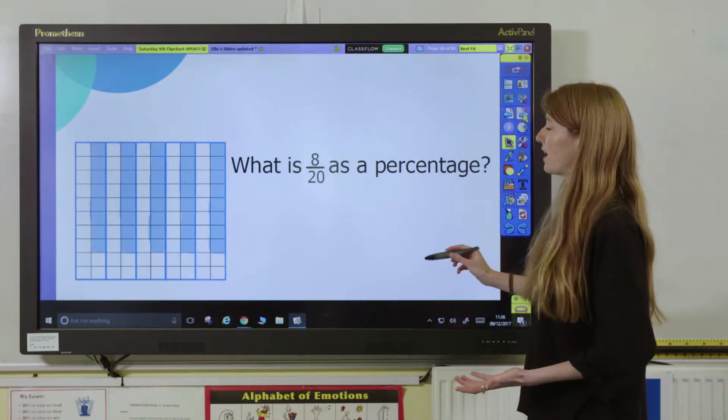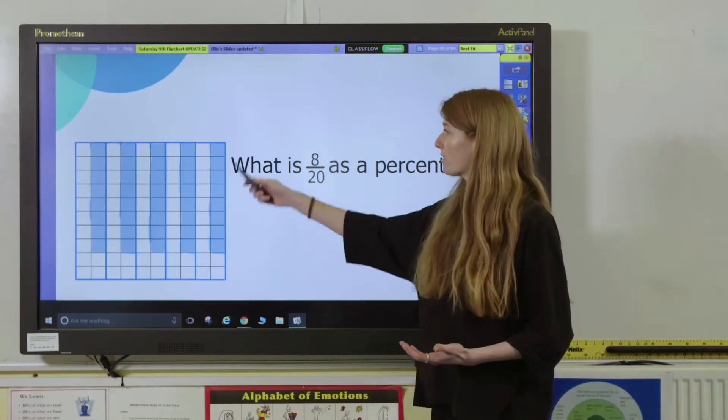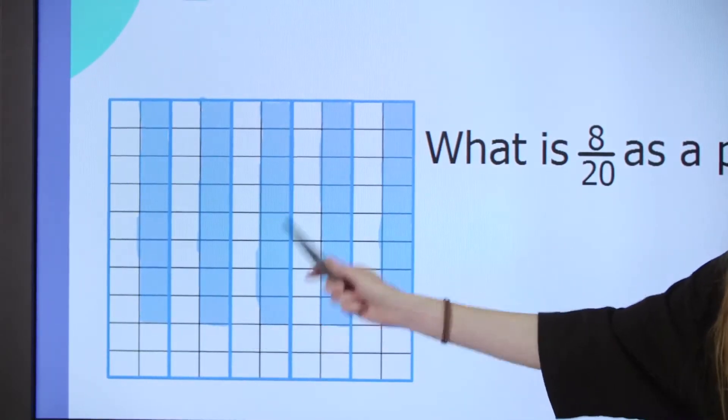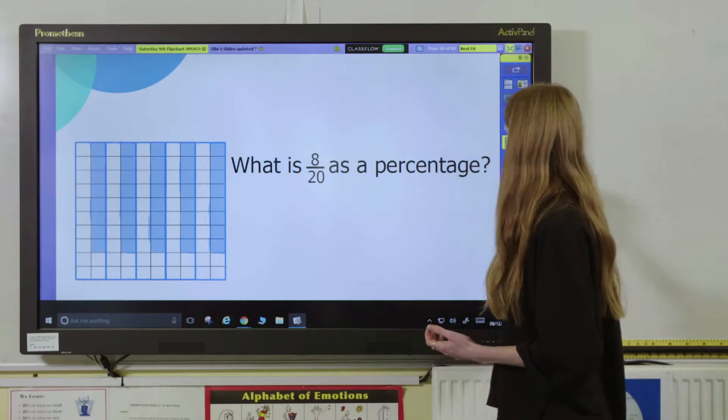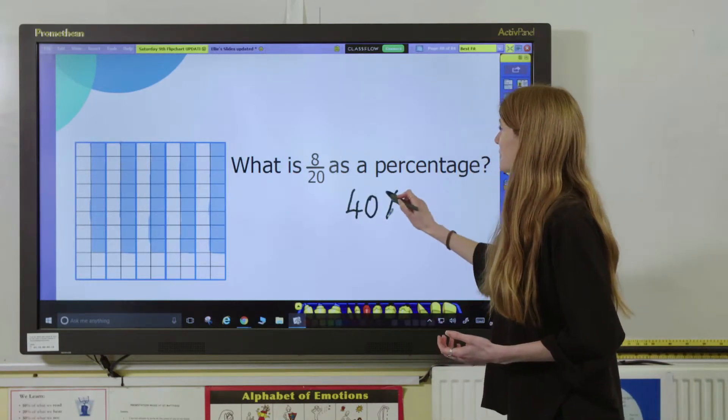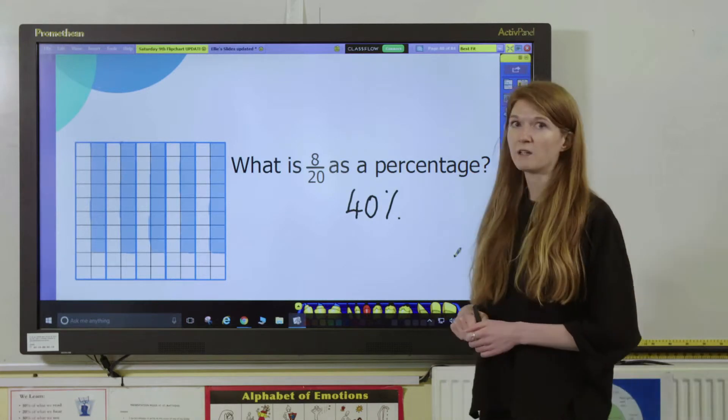What they should find is that they will end up with 8, 16, 24, 32, 40 out of 100. So, 8 twentieths as a percentage is 40%.